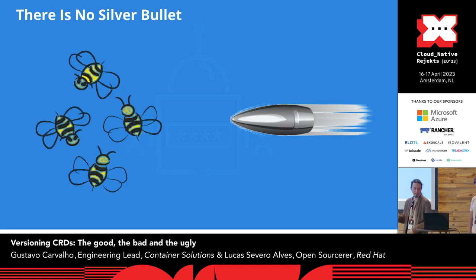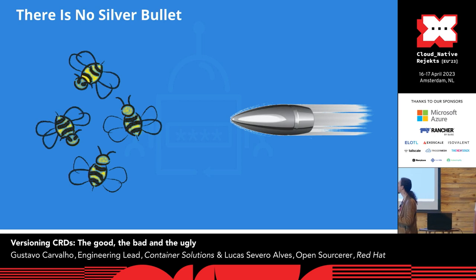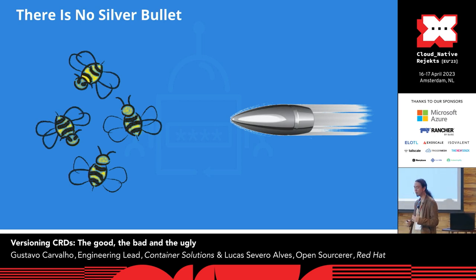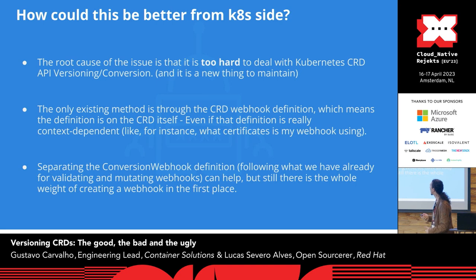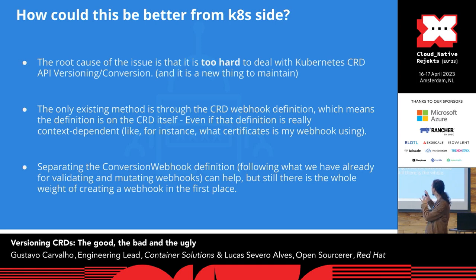This slide shows a silver bullet being shot at a swarm of bees — not even a silver bullet can kill a swarm of bees. It all comes down to requirements, understanding the impact you want to have, and the effort you want to put in. We're starting to think: how could this look a little bit better from the Kubernetes side? Because doing this talk and all the experience we had, it all comes down to: it's too hard to deal with Kubernetes API versioning and API conversion.